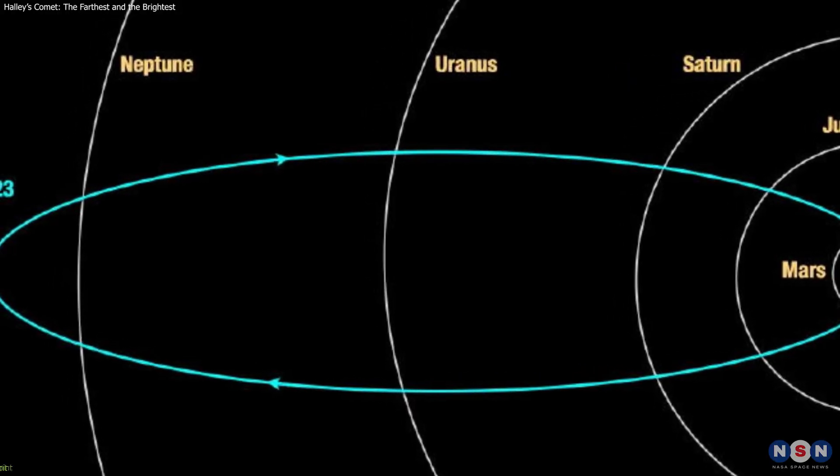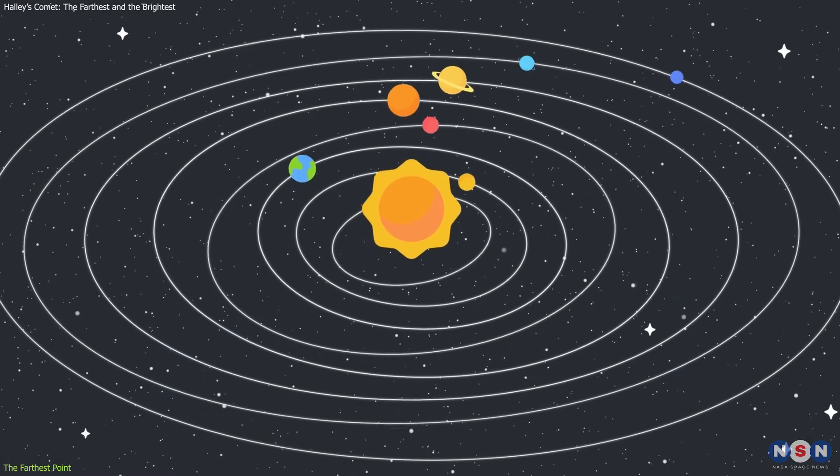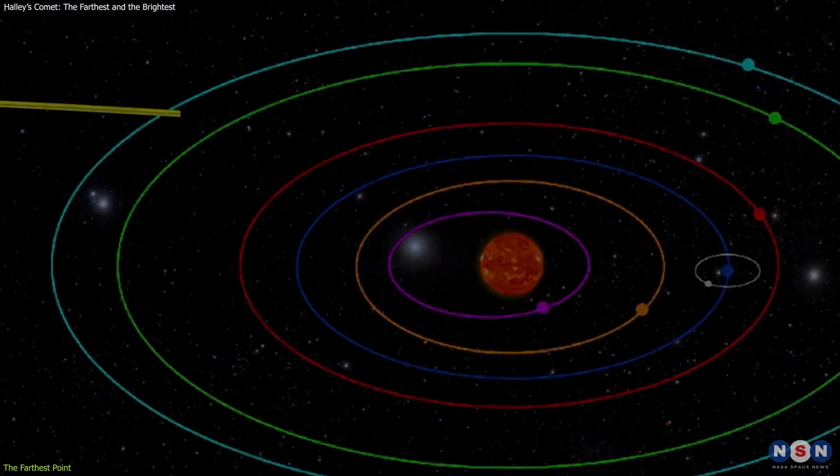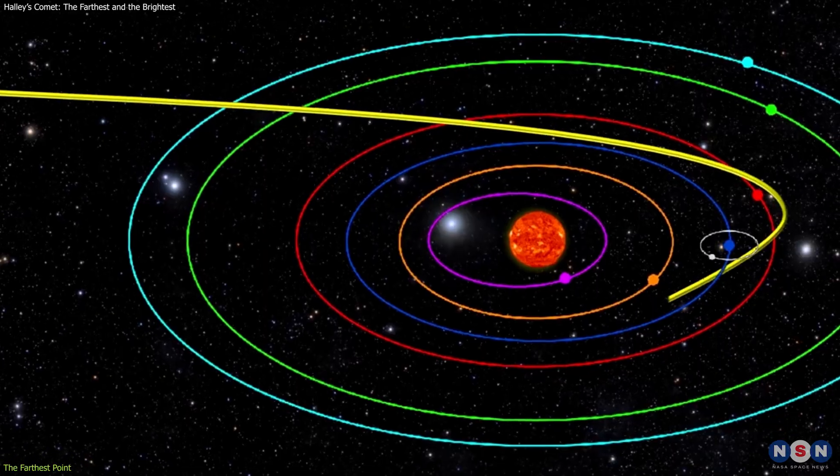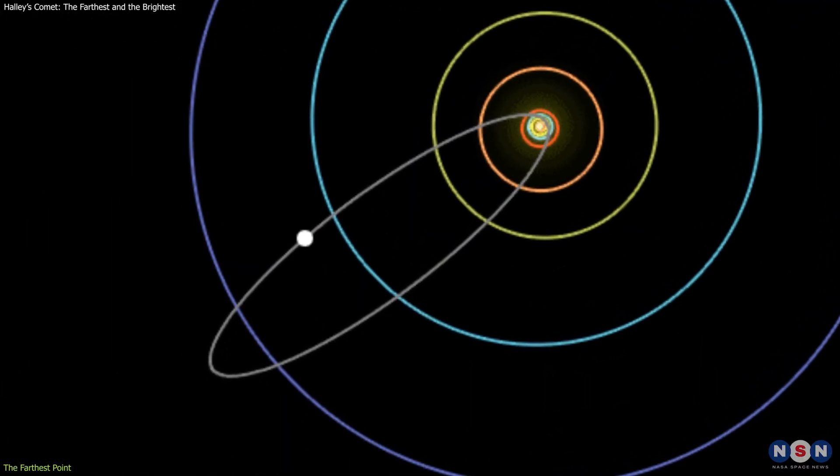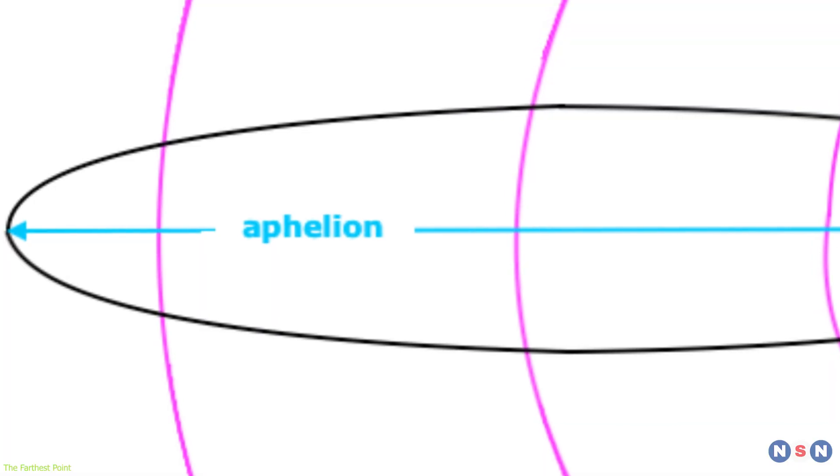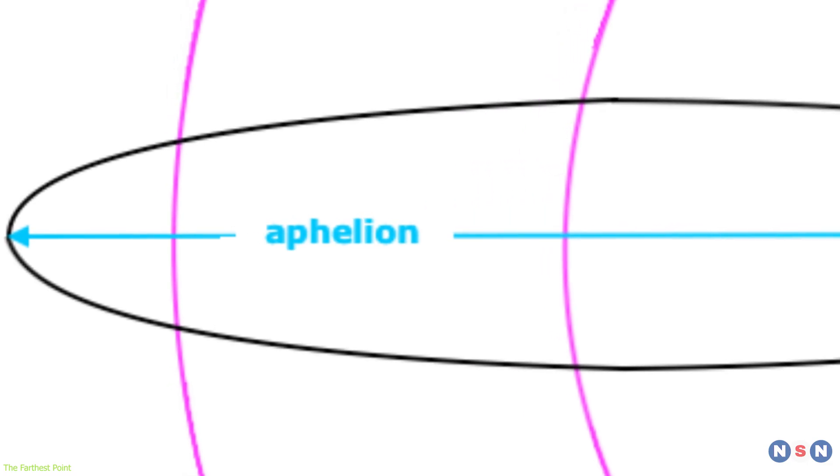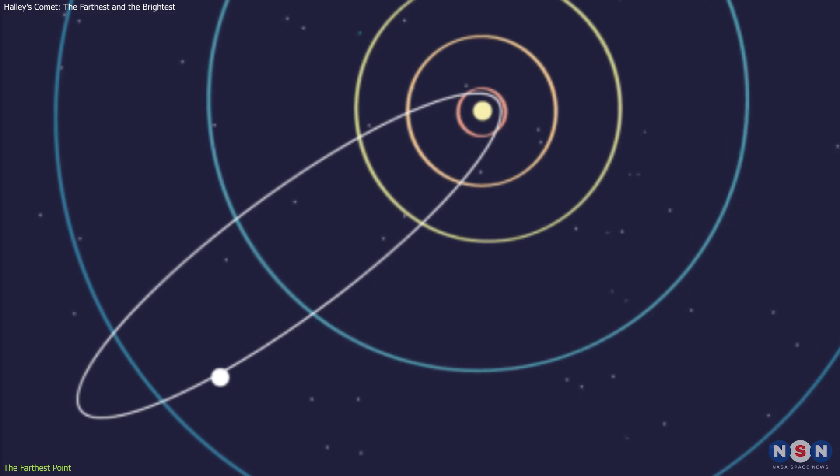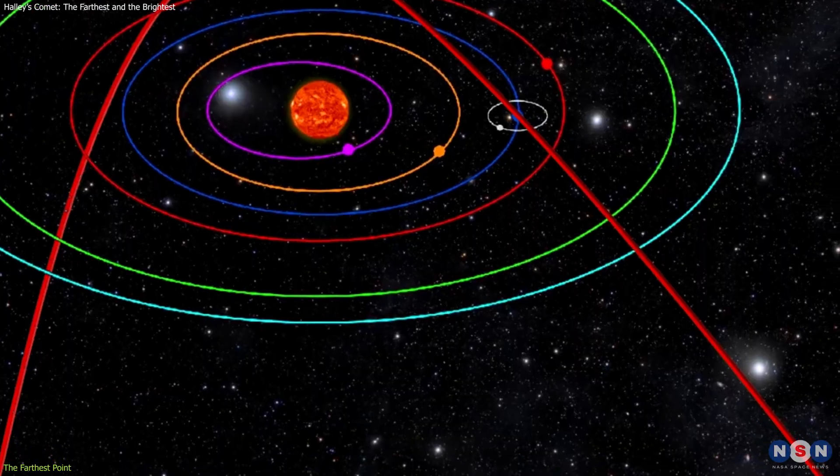The first thing we need to know about Halley's Comet is its orbit. Unlike the planets, which have nearly circular orbits around the sun, comets have highly elliptical orbits, which means they have a very long and narrow shape. This means that comets have two extreme points in their orbits: the perihelion, which is the closest point to the sun, and the aphelion, which is the farthest point from the sun. The distance between these two points can be very large, depending on the comet's eccentricity, which is a measure of how stretched its orbit is.